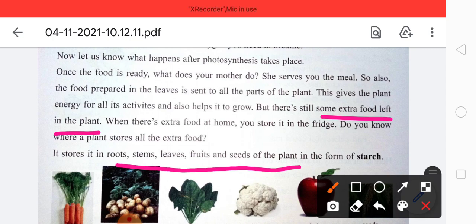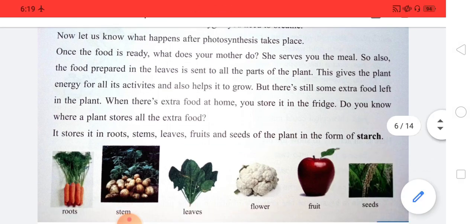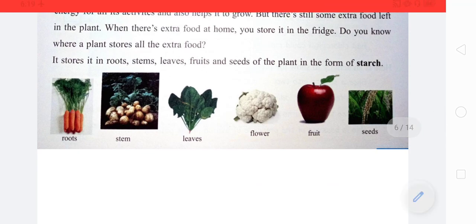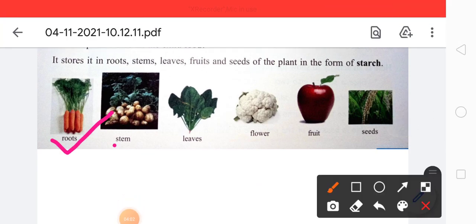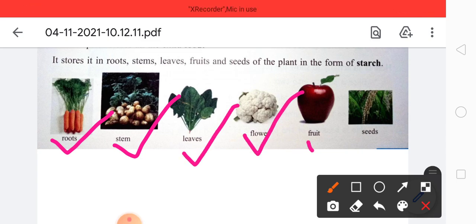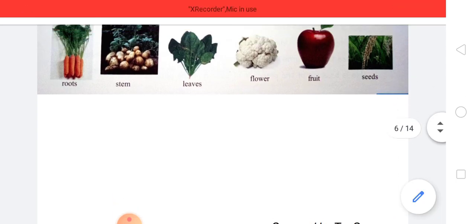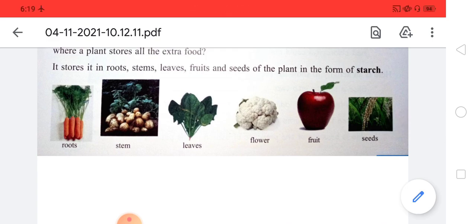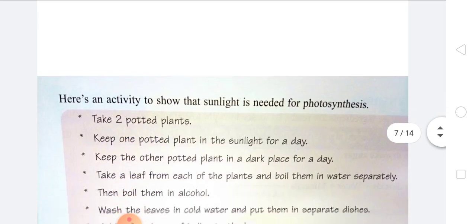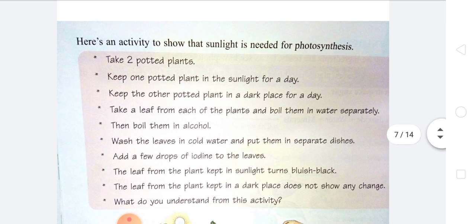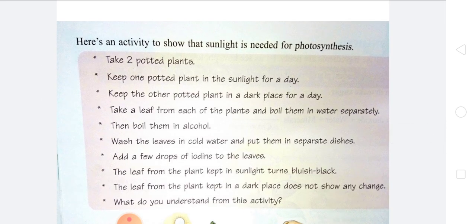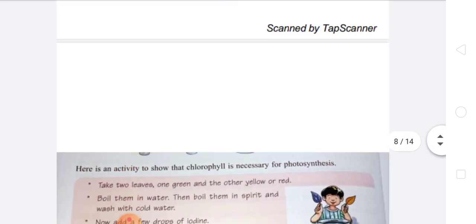In the form of starch. You can see the roots like carrot, the stems, the leaves, the flower like cabbage, the fruit like apple, and seeds. These are the examples where the plant stores their food in the form of starch. In the next class we will do an activity and see why or how sunlight is needed for photosynthesis.